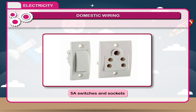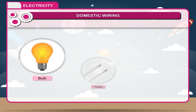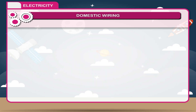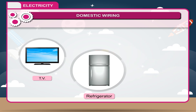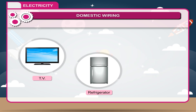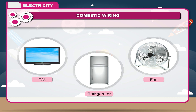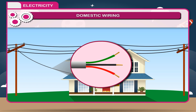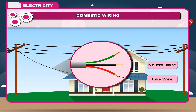5 A switches and sockets are used for bulbs, tubes, radio, television, refrigerator, fans, etc. The main supply is delivered to the house using a 3-core wiring called live, neutral and earth.